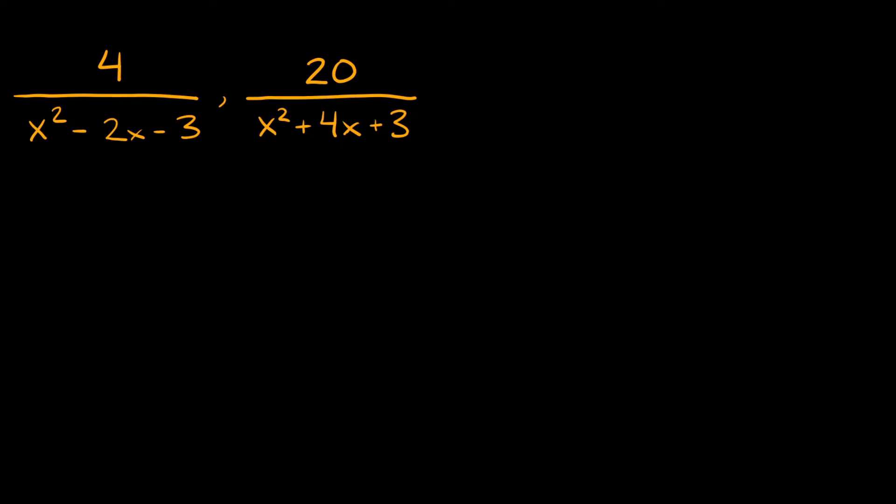Let's do one last example. To find the LCD we're just focusing on the denominators. In this case we don't need a factor tree because we have some trinomials down here. Whenever you have trinomials, all you have to do is factor them.